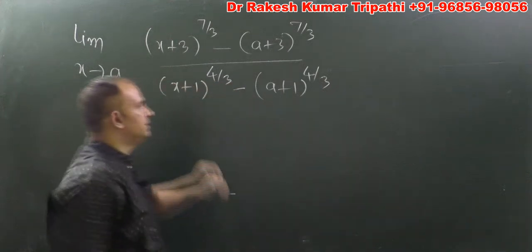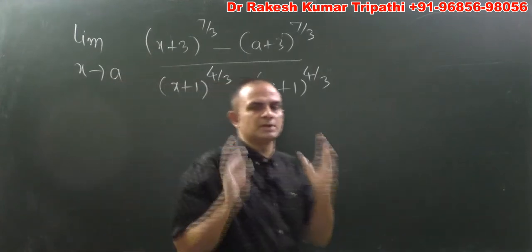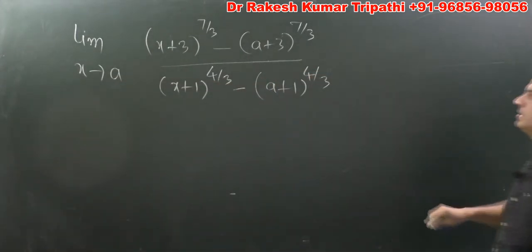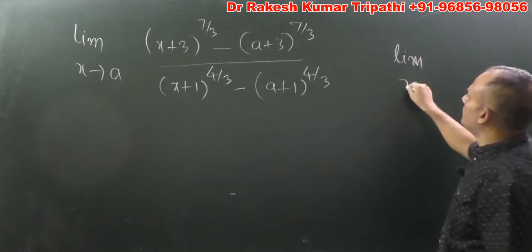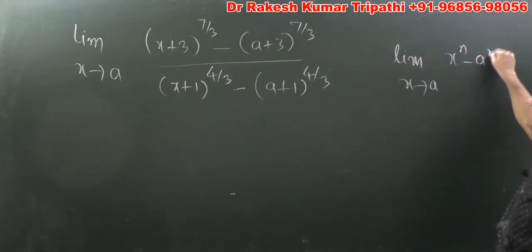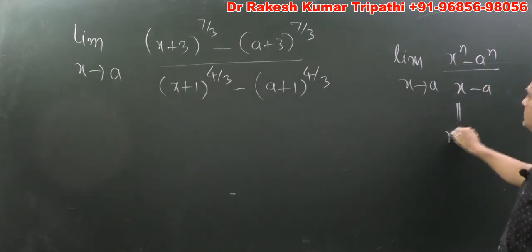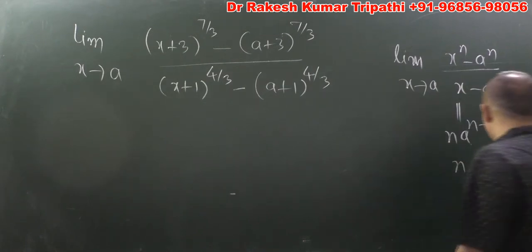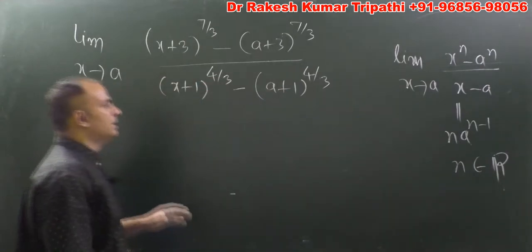This is a special question of limit to be evaluated. To evaluate this question, we need to use the limit formula: limit x tends to a of (xⁿ - aⁿ)/(x - a), whose value is n·aⁿ⁻¹, where n is a real number.